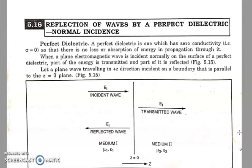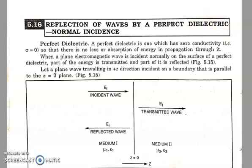Hello students. In this lecture we are going to study the case of reflection of waves by a perfect dielectric at normal incidence. In the last lecture we covered the reflection of waves by a perfect conductor at normal incidence. Now in this lecture, the material used for the boundary is the perfect dielectric material.